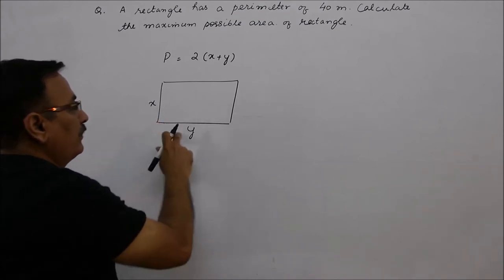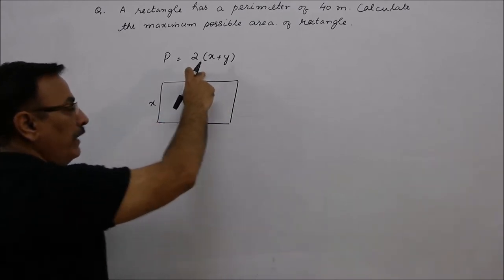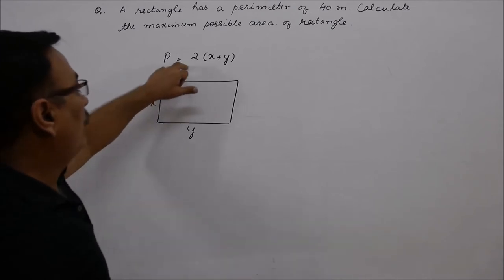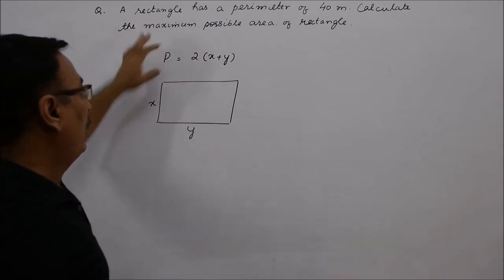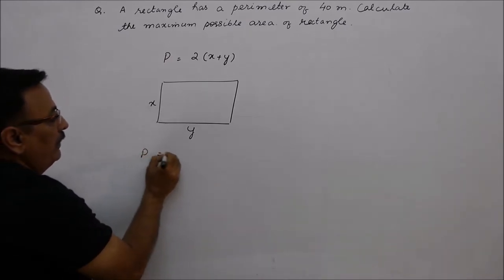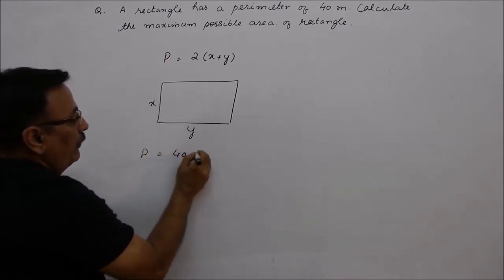So, x plus y plus x plus y. The perimeter will come. Or two times x plus y is perimeter. And we know the value of the perimeter. Perimeter is equal to 40 meters.